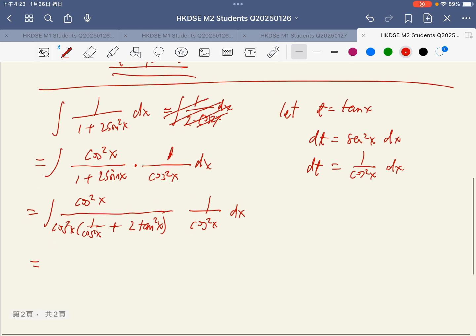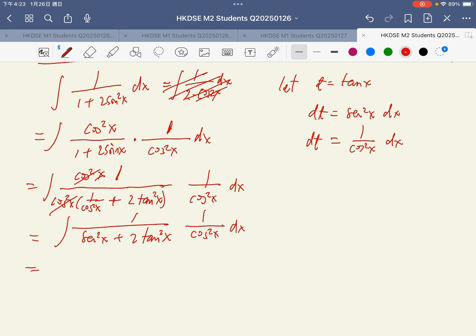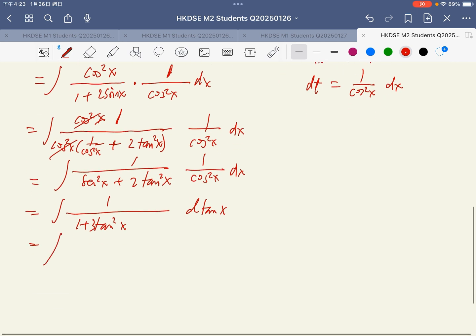Now I change this one into t by factorizing cosine outside. This is 1 over cosine square x plus 2 tangent square x. And cancel this. Secant square x plus 2 tangent square x, 1 over. Next step, change to secant. Secant is 1 plus tangent square. Now I change all the things to dt, 1 plus t square dt.